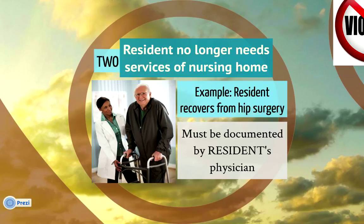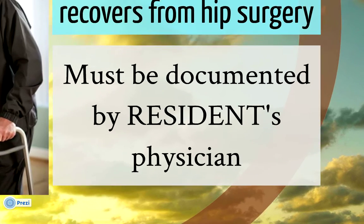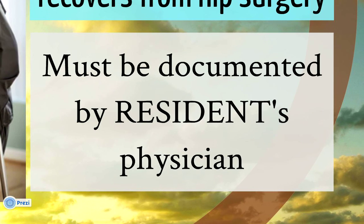The second situation in which discharge is appropriate is when a resident no longer needs the services of the nursing home. A good example is when a resident falls and injures his hip, has hip surgery, and goes to a nursing home to recover. When he has completed therapy and is doing better, it is appropriate to discharge the resident. Again, that determination should be made and documented by the resident's physician.